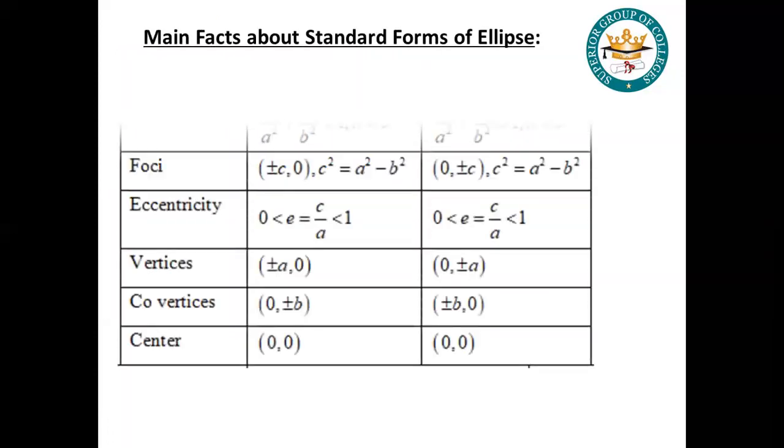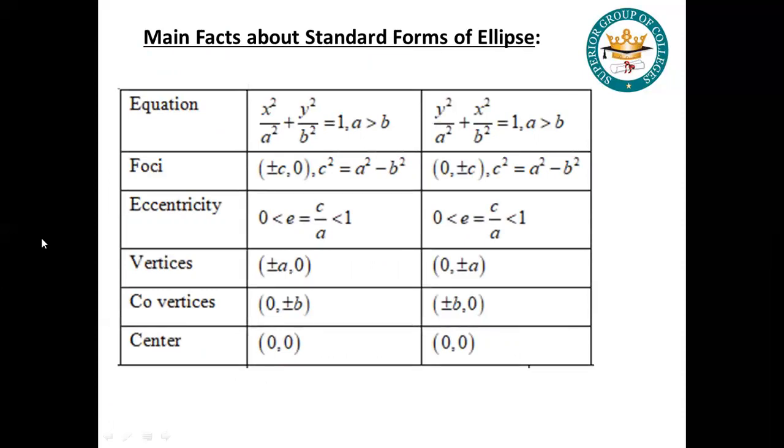The main facts about the standard form of ellipse. You should know the equation. What is the ellipse? x² / a² + y² / b² = 1, where a is greater than b. If a is under x, then the major axis will be on the x-axis. And if a is under y, then the major axis will be on the y-axis.